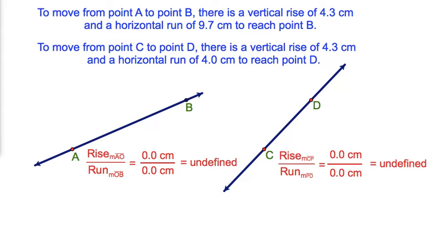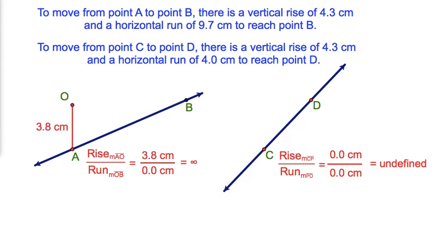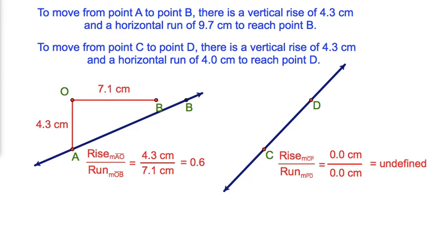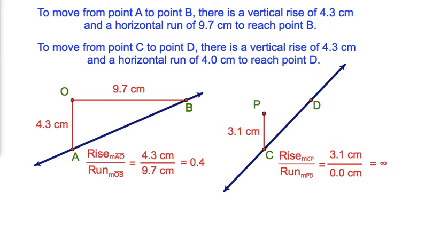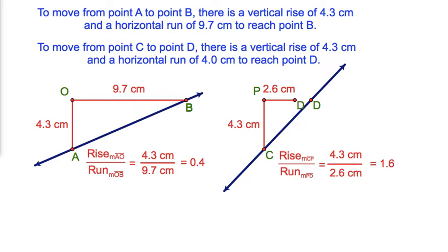To move from point A to point B, there is a vertical rise of 4.3 cm and a horizontal run of 9.7 cm to reach point B. To move from point C to point D, there is a vertical rise of 4.3 cm and a horizontal run of 4 cm to reach point D.